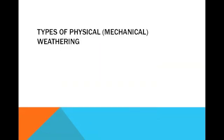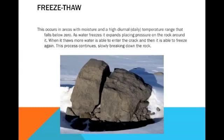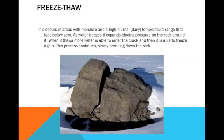Now we're going to look at the types of physical or mechanical weathering. Firstly, we've got freeze-thaw. This occurs in an area with moisture and a high daily temperature range that falls below zero. There are cracks inside a rock, and during the day when it's warm, water enters the rock through the cracks. When it gets colder, the water freezes, and when it freezes, it expands, placing pressure onto the rock. When it thaws and becomes liquid again, more water is able to enter the crack, freeze again, and expand. This cycle happens again and again and slowly breaks down the rock.